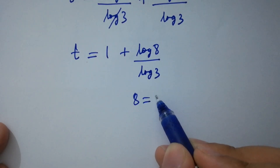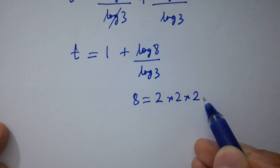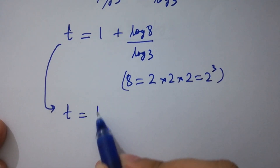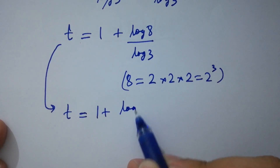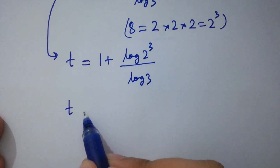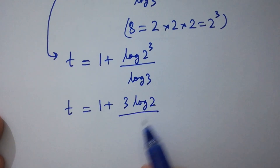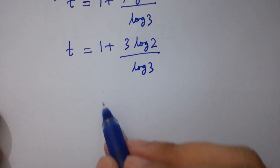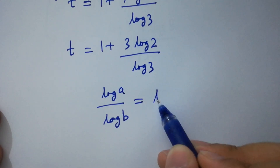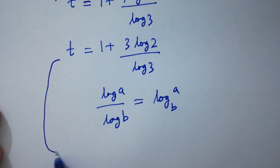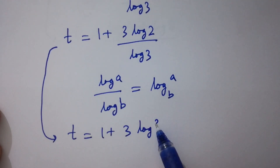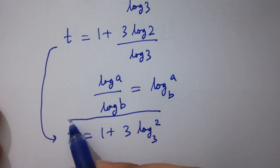Since 8 equals 2 cubed, we have t equal to 1 plus log 2 cubed over log 3, which gives t equal to 1 plus 3 log 2 over log 3. Using the change of base formula, log a over log b equals log a to the base b, so t equals 1 plus 3 log 2 to the base 3.